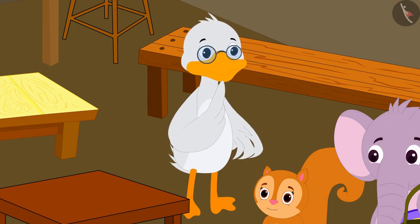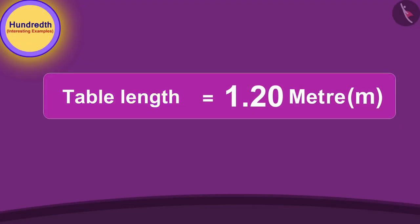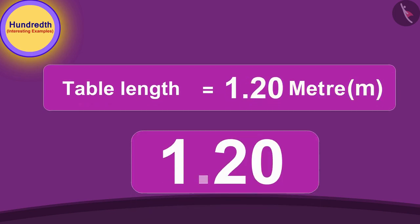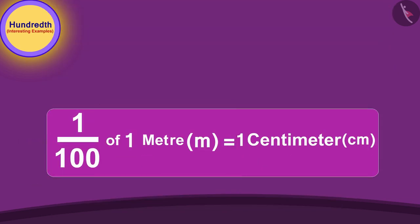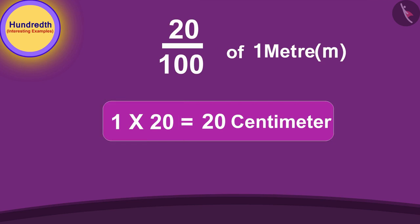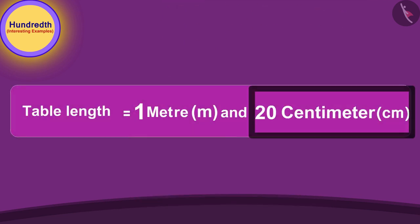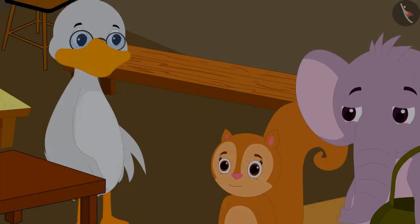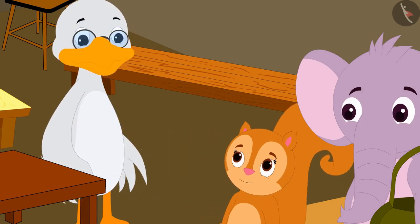Chanda said, 'Okay, now I understand uncle! The length of this table is 1.20 meters. The twenty hundredths written after the decimal is equal to 20 centimeters, so the length of this table is one meter and twenty centimeters.' Uncle said, 'Well done Chanda, you learned very quickly!'